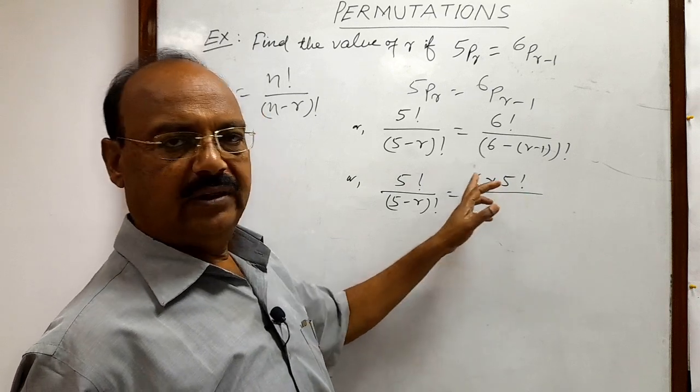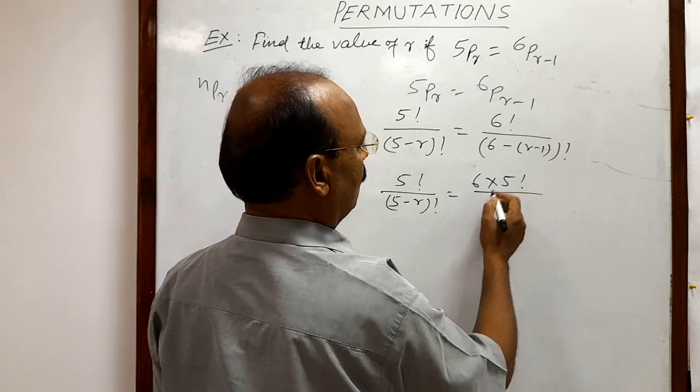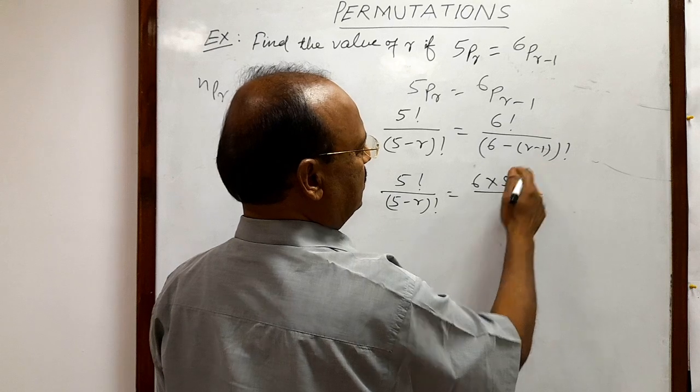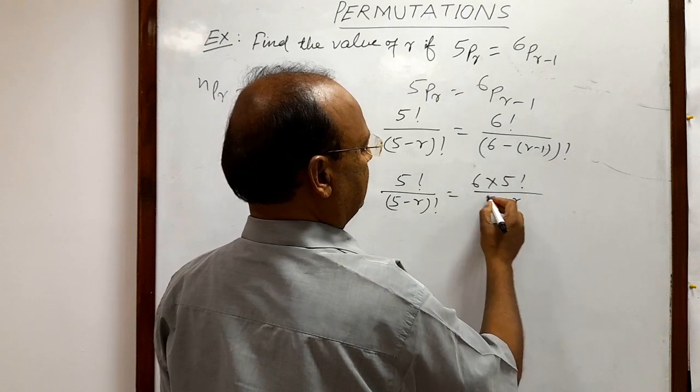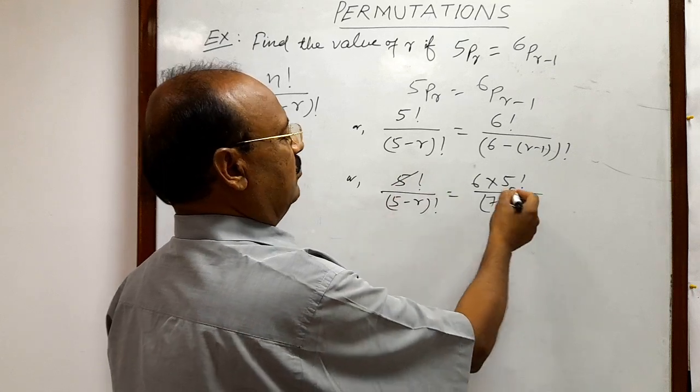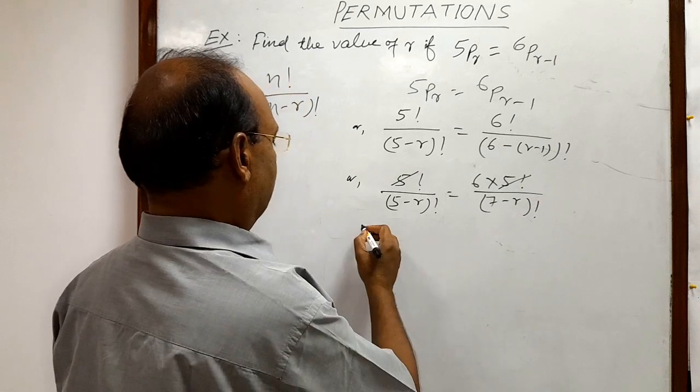So this is 6 factorial very easily. And here the denominator is 6 plus 1 is 7, so 7 minus r factorial. This 5 factorial will be cancelled out from the numerator on both sides. So finally, we are getting 1 by (5 minus r) factorial.